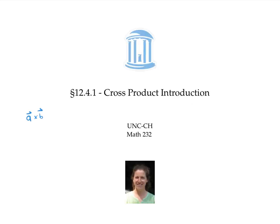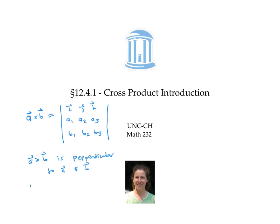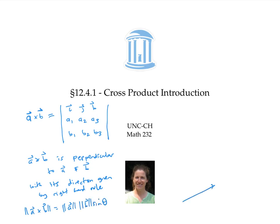In this video, I gave a formula for a cross b in terms of components, and also a way to think about a cross b geometrically. A cross b is perpendicular to a and b, with its direction given by the right-hand rule. In addition, the length of a cross b equals the length of a times the length of b times sine theta, where theta is the angle between zero and 180 degrees between a and b. These facts about length and direction completely determine the vector a cross b.